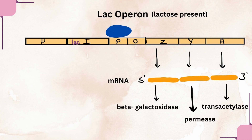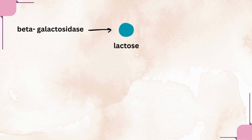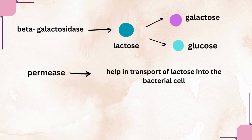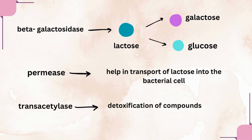Lac Z codes for the enzyme beta-galactosidase, lac Y codes for the enzyme permease, and lac A codes for the enzyme transacetylase. These enzymes perform different functions. For example, beta-galactosidase acts on lactose sugar and cleaves it into two components — galactose and glucose. Permease helps in the transport of lactose sugar into the bacterial cell. Transacetylase helps in the detoxification of compounds.